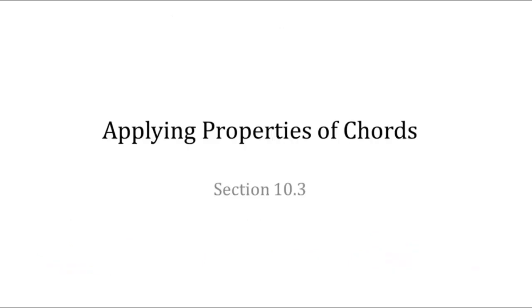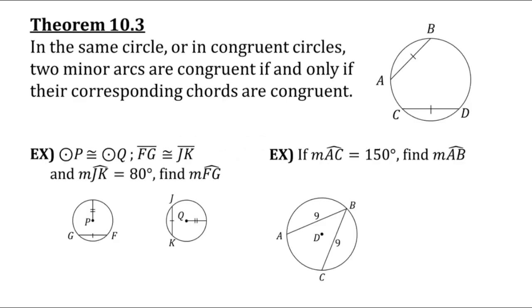Now let's look at section 10.3, applying properties of chords. Theorem 10.3 states that in the same circle or in congruent circles, two minor arcs are congruent if and only if their corresponding chords are congruent. So congruent chords means congruent arcs and vice versa. Let's look at our first example: circle P is congruent to circle Q, FG is congruent to JK, and the measure of arc JK is 80 degrees.